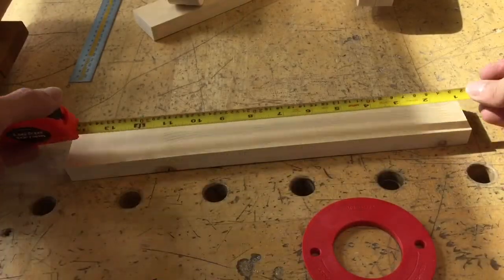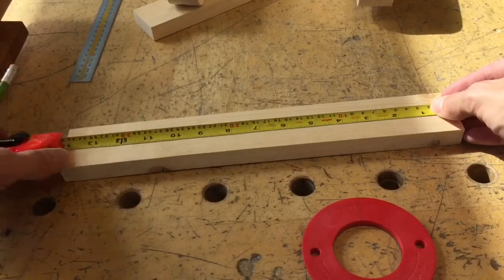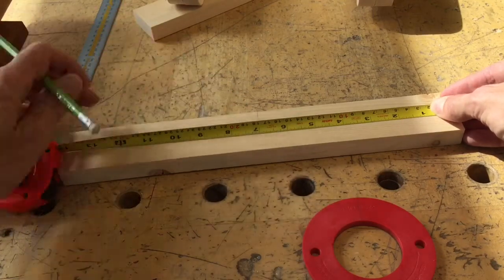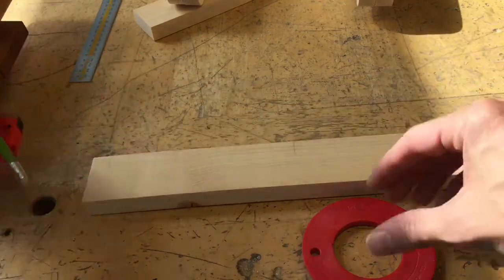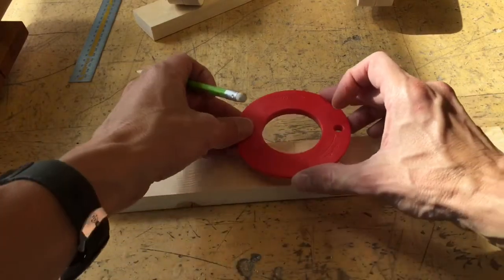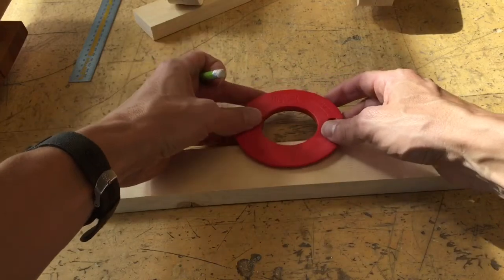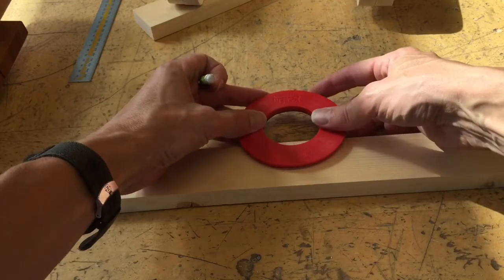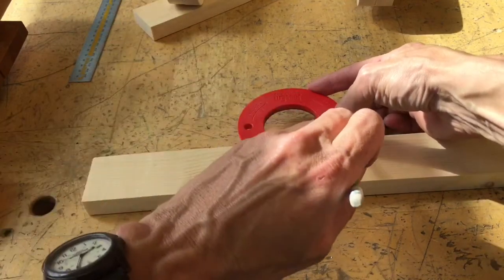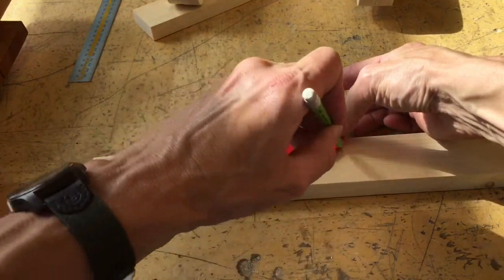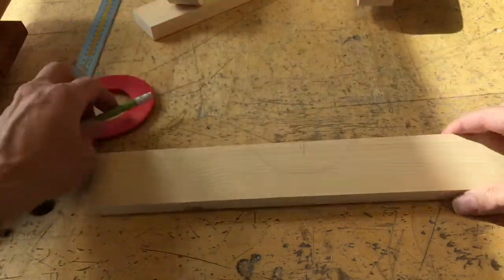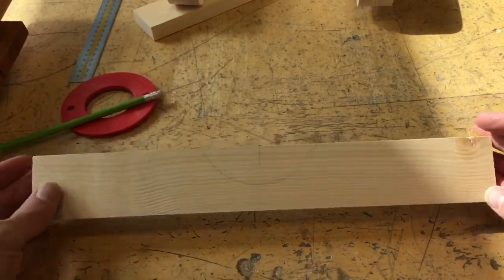For the simple handle, we're just going to measure the center. That's seven, that's seven. I'm going to take our little circle here that we used before, line that up with our line here, and trace it. And we'll go cut that out.